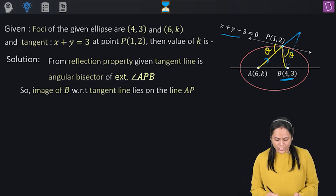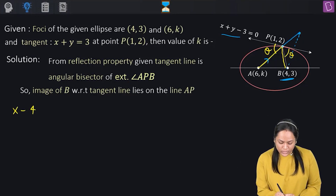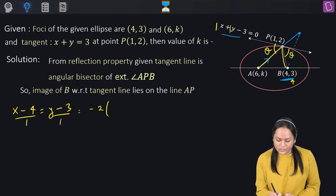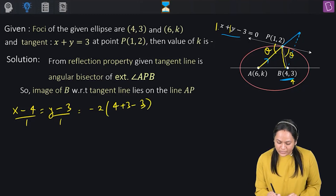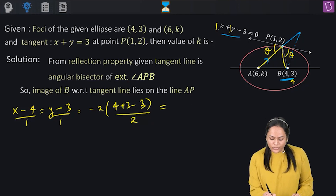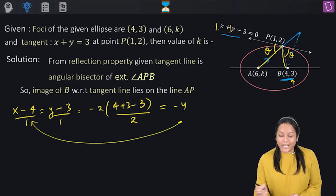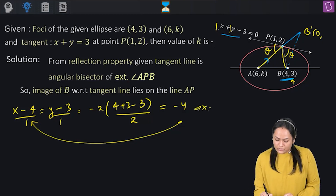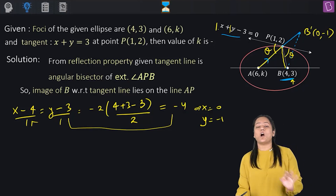Using the image formula: (x − 4)/1 = (y − 3)/1 = −2(4 + 3 − 3)/(1² + 1²) = −2·4/2 = −4. So the x-coordinate of B' is 4 + 1·(−4) = 0 and the y-coordinate is 3 + 1·(−4) = −1. Thus B' = (0, −1).